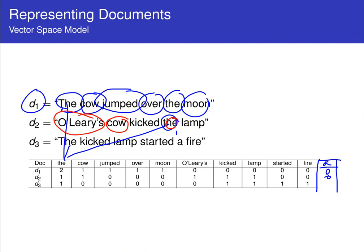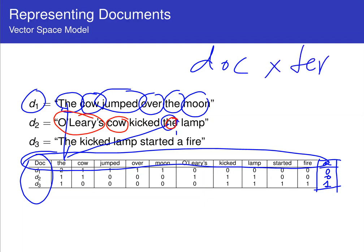And then document 3. The appears once. Cow does not show up. Jump does not show up. Over. Moon. O'Leary's. Those words aren't there. And then kicked is there. Lamp is there. Started there. Fire is there. And A is there. And this kind of representation is what we call the vector space model. And for the rest of the few lectures that we have in information retrieval, we're going to assume a matrix like this, which is a document by term or word matrix. Document by term matrix. So keep in tuned. And this is the basic information for the remainder.